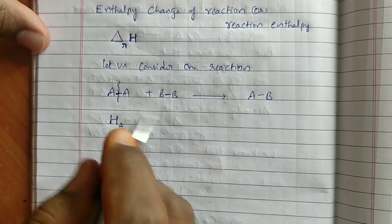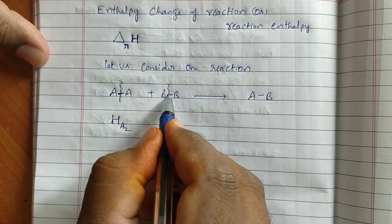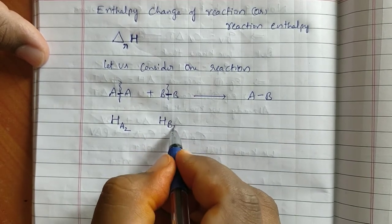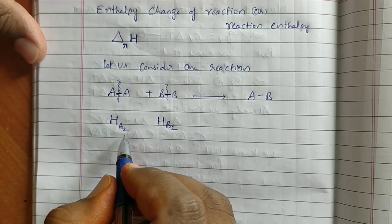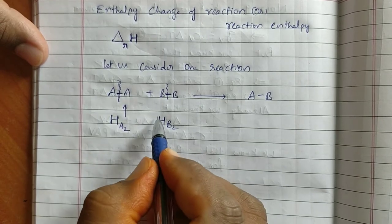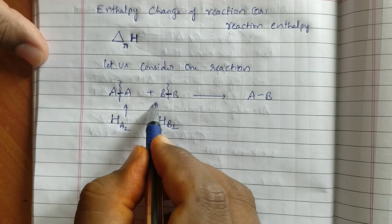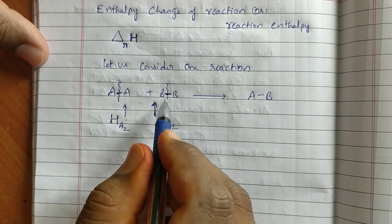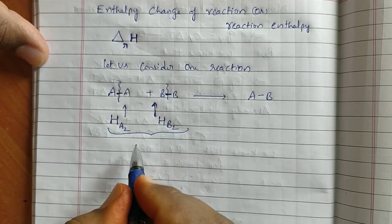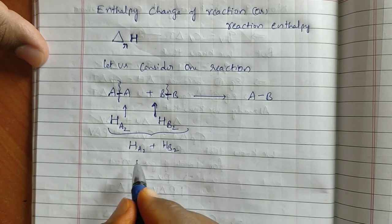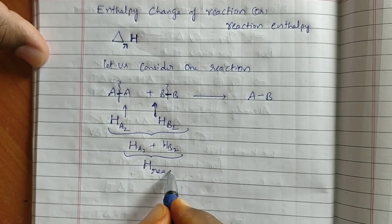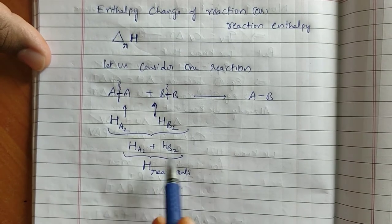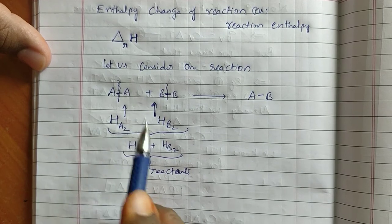The amount of energy required to break the bond between B and B is the bond energy of B2. Whatever energy we are giving, that energy is absorbed by A2 and B2. So on the reactant side, the total amount of energy — H(A2) plus H(B2) — is called H reactants. The total energy required for breaking the bonds of the reactants is called H reactants.